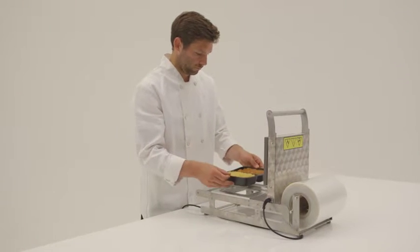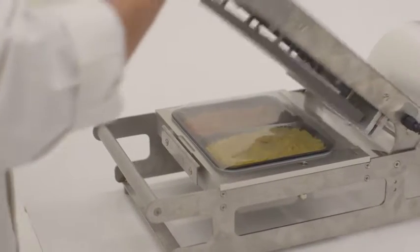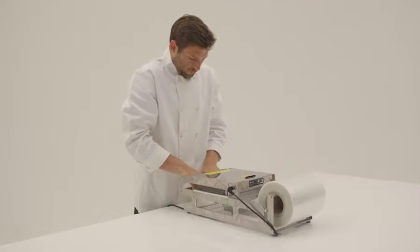Load the tray in the machine and pull the film forward so it covers the tray edge. Pull the two handles together and press down firmly for 2-3 seconds.